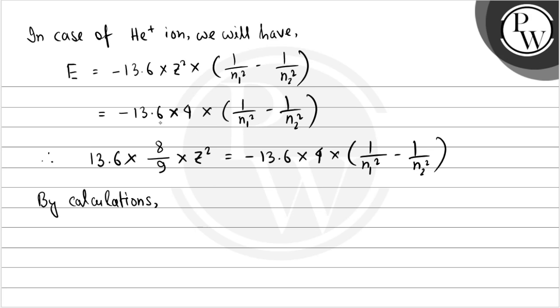By calculations we get from these two formulas: n1 equals 2, n2 equals 6, and z equals 1.